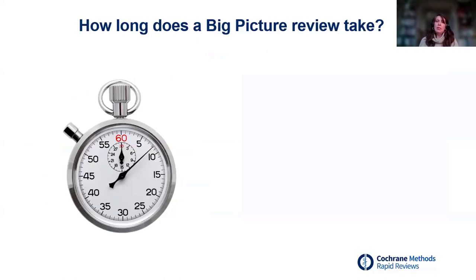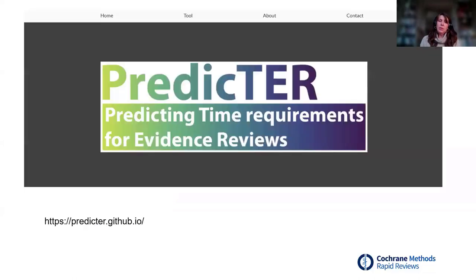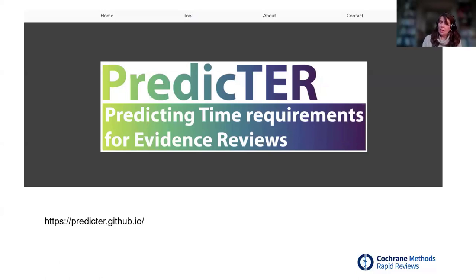When starting to think about undertaking a big picture or scoping review, it's useful to know how long it's going to take, because if you're going to speed that process up, you need to know how long it should take — which helps when planning your team, allocating tasks, and working with commissioners. One tool worth mentioning is the PREDICTOR tool, designed to help work out what the impact of different decisions are throughout the review process. It's currently being worked on and developed with plans to relaunch at the Global Evidence Summit in September, but it's still a really useful tool.